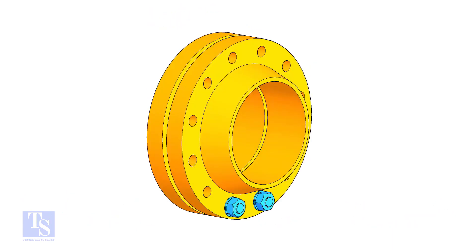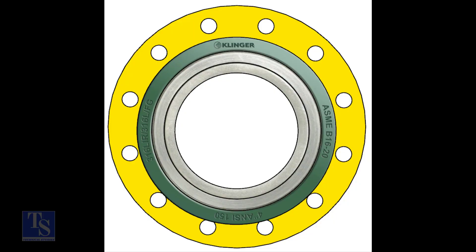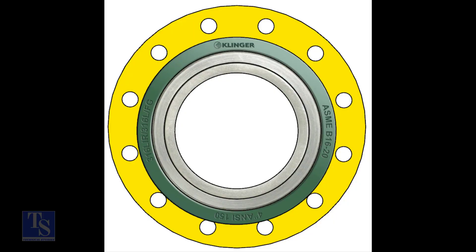Put two bolts in the adjacent bottom side holes. Put the gasket between the flanges. Now the gasket sits eccentrically between the flanges.